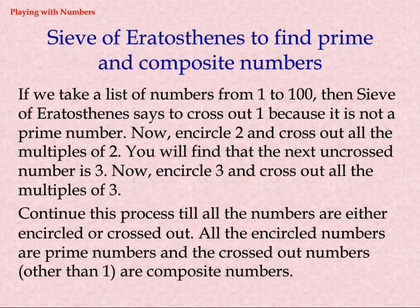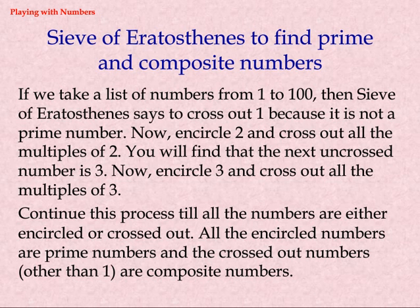The Sieve of Eratosthenes defines prime and composite numbers. If we take a list of numbers from 1 to 100, cross out 1 because it is not a prime number. Encircle 2 and cross out all the multiples of 2. The next uncrossed number is 3 — encircle 3 and cross out all its multiples. Continue this process till all numbers are either encircled or crossed out. All encircled numbers are prime numbers and the crossed-out numbers, other than 1, are composite numbers.